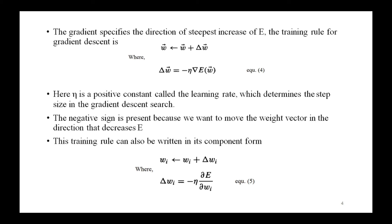This training rule can also be written in component form: w-vector equals w-vector plus delta w-vector, where delta w-i equals negative eta times delta E divided by delta w-i. This makes clear that steepest descent is achieved by altering each component w-i of the weight vector in proportion to delta E divided by delta w-i. Kindly note down these steps one by one.